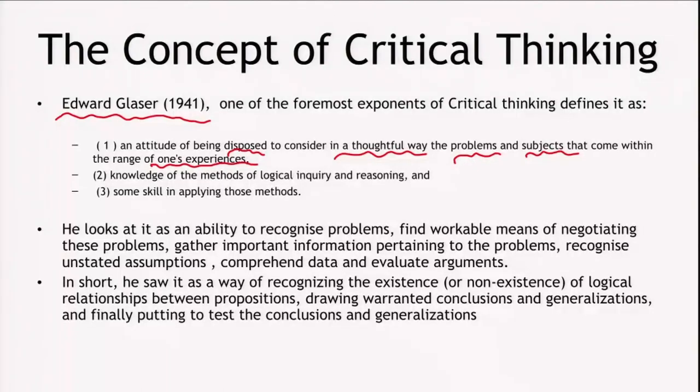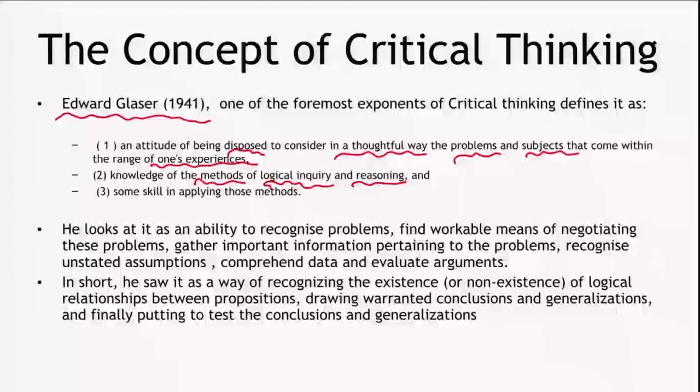Secondly, critical thinking skill is defined as knowledge of the methods of logical inquiry and reasoning. The first capacity is being disposed to, being inclined to do critical thinking. And once you are inclined, the second factor is knowing how to do it — the methods of logical inquiry and reasoning. Going back to my previous lecture on the importance of training: once you are inclined to do critical thinking, it also becomes necessary to train to do it properly, taking care of the methods and ways of logical reasoning. And finally, some skill in applying these methods.